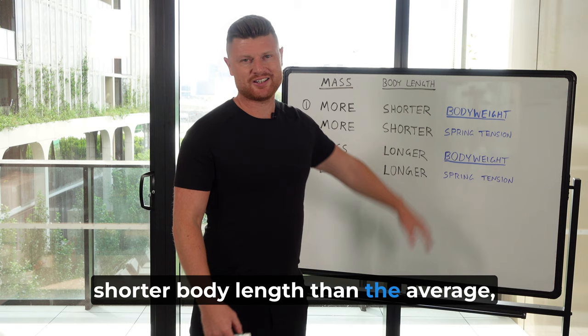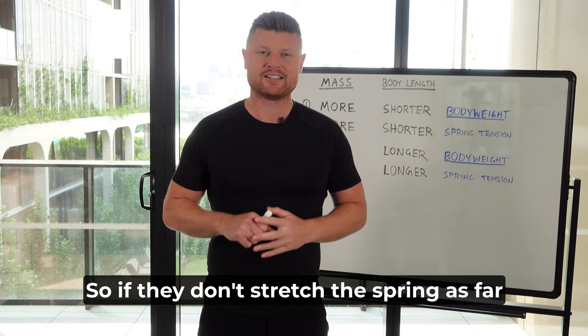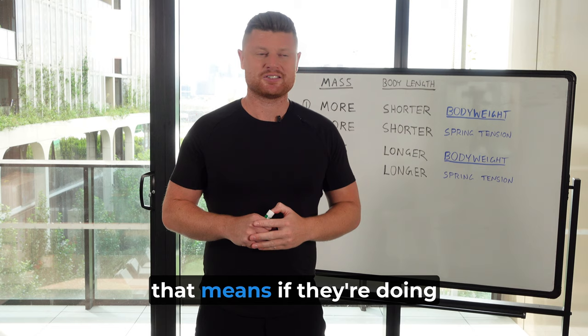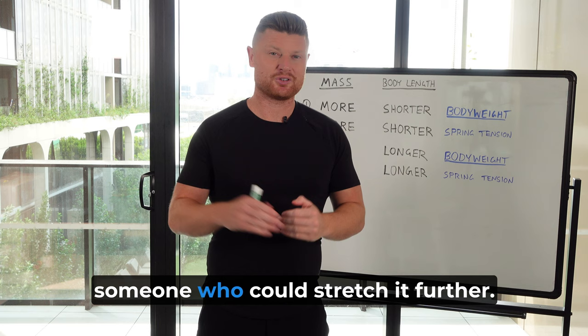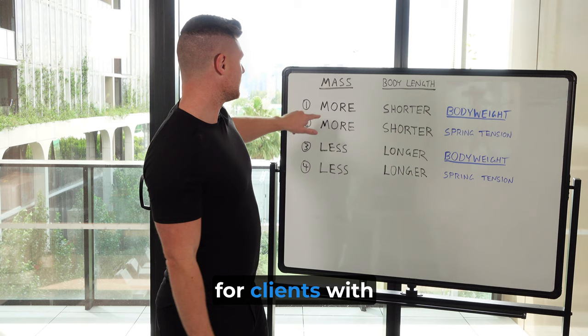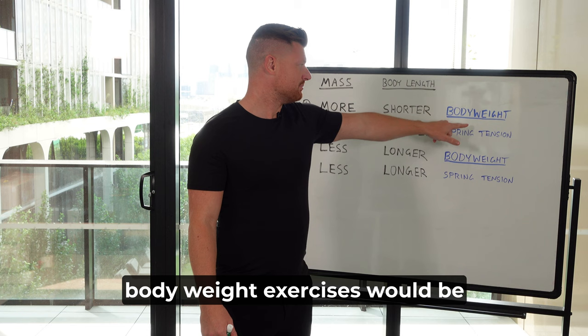If they've got a shorter body length than average, that means they won't stretch the spring as far. So if they don't stretch the spring as far in their range of motion and they're doing a body weight exercise, they'd get less support than someone who could stretch it further. We can predict then that for clients with more body mass than average and a shorter body length than average, body weight exercises would be comparatively harder.